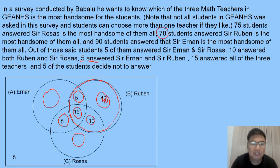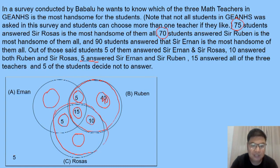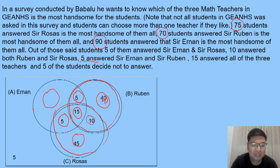Next, for Sir Rosas, the total is 75. The values already inside his circle are 5 plus 15 is 20, plus 10 is 30. To reach 75, we need 45. Then for Sir Ernan, his total is 90. He already has 5 plus 15 is 20, plus 5 is 25. So 90 minus 25 means the remaining portion of his circle needs 65.